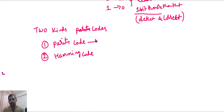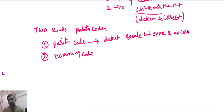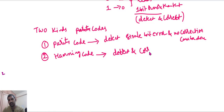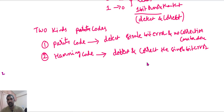In parity code, we are going to detect only single bit errors — no correction can be done. It is only for error detection, no correction. Whereas in Hamming code, we are going to detect and correct single bit errors.